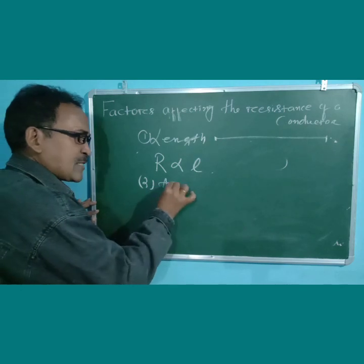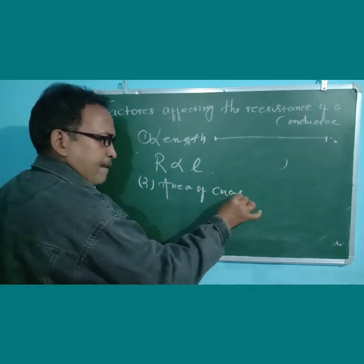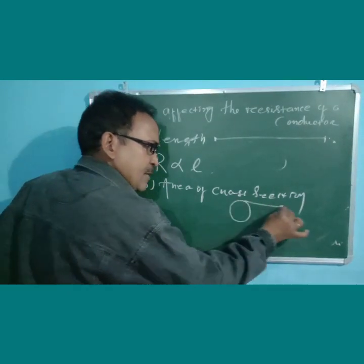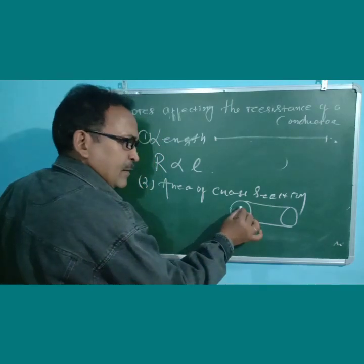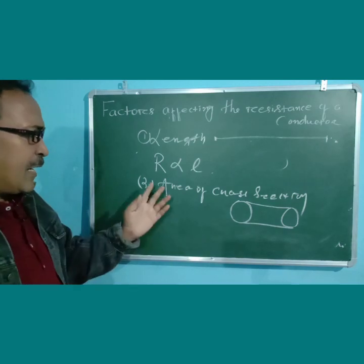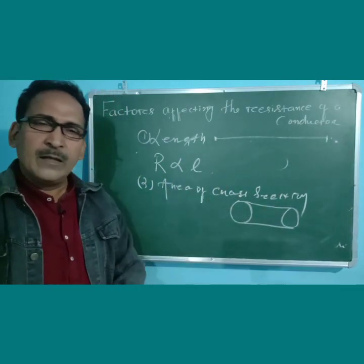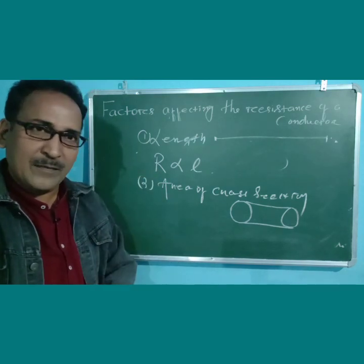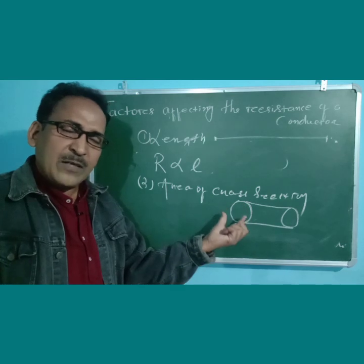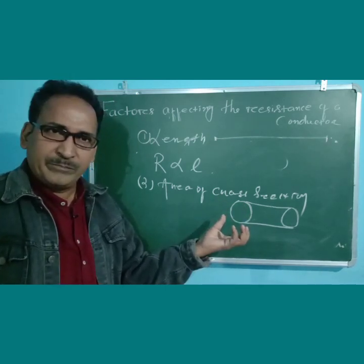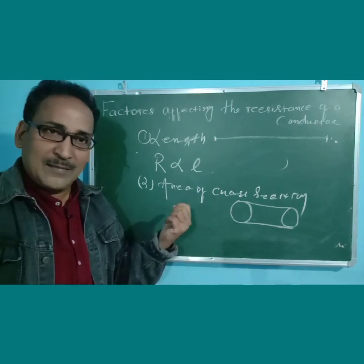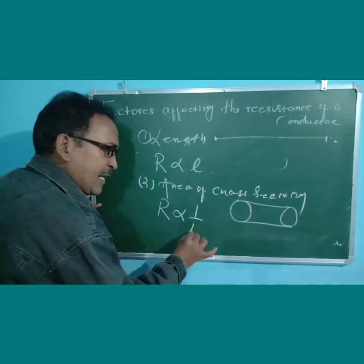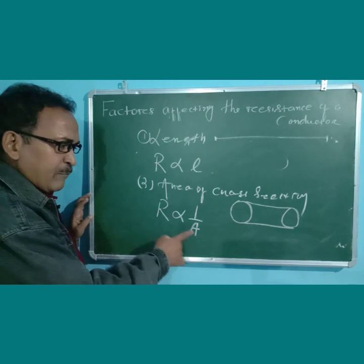The second factor is area of cross section — also called the area or thickness of the conductor. The area or thickness of the conductor is always inversely proportional to resistance. If the area or thickness of the conductor gets halved, the resistance will double, and vice versa. So R is inversely proportional to the area of cross section — they are inversely proportional to each other.